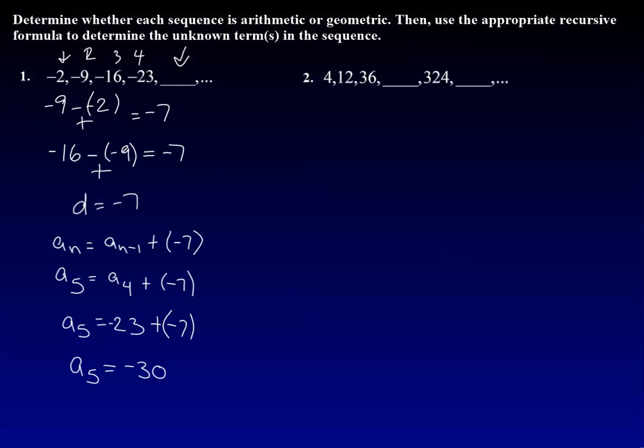So a sub 5 equals negative 30. I understand that you may be able to just add the pattern real easy, but I want to see you use the formula to do this. After this chapter is over, if you don't want to use that formula and you just want to follow the pattern, go for it.